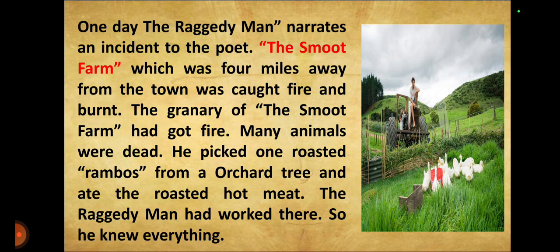One day the Raggedy man narrates an incident to the poet. A farm which was four miles away from the town had caught fire, and the granary of that farm had also caught fire. Many animals were dead. He picked one roasted animal from an orchard tree and ate the roasted hot meat.